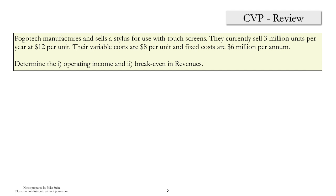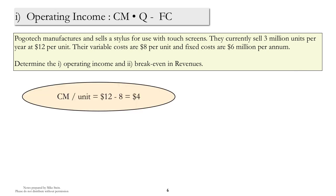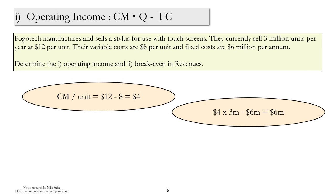To test our understanding of basic cost-volume-profit analysis, let's do a couple of relatively simple problems. In the first problem, determine the operating income and the breakeven in revenues. Operating income is defined as contribution margin per unit times quantity minus fixed cost. Substituting in the values from the problem, the contribution margin is sales price minus variable costs: $12 minus $8, or $4. Multiply that by the number of units, 3 million, subtract off fixed costs of $6 million, and we're left with operating income of $6 million.